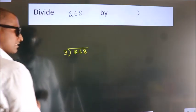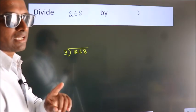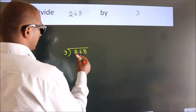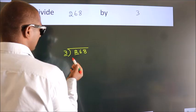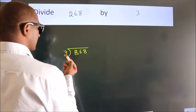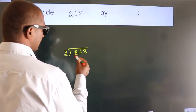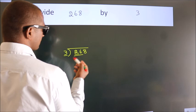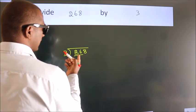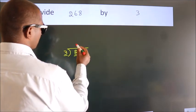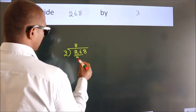This is your step 1. Next, here we have 2, here 3. 2 smaller than 3. So, we should take 2 numbers, 26. A number close to 26 in 3 table is 3 8s, 24.